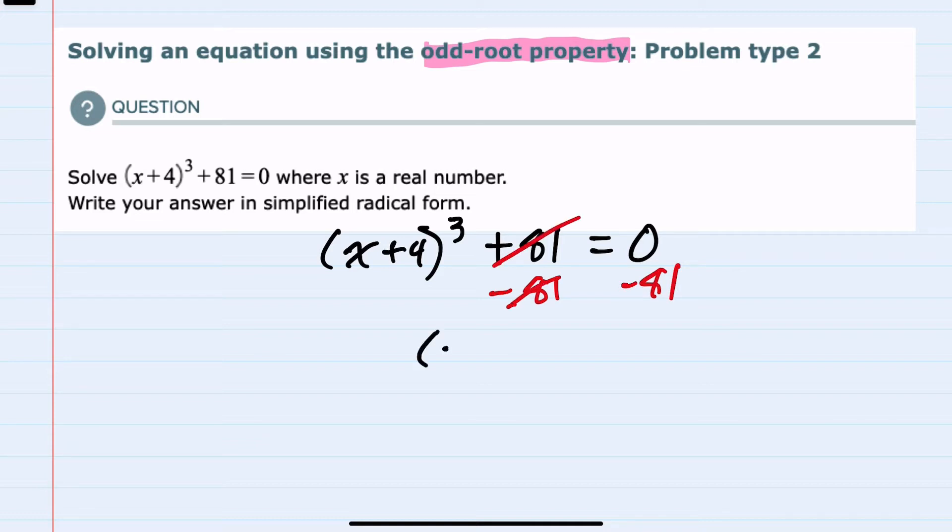Canceling on the left leaves me (x+4)³ = -81. This is where the odd-root property comes in, because I can take the cubed root of both sides of this equation.